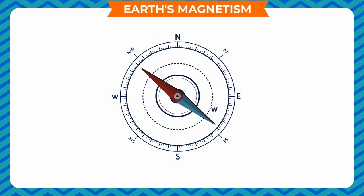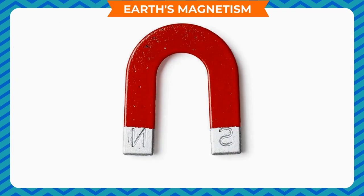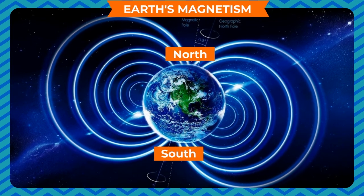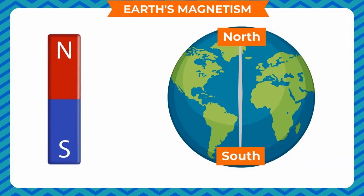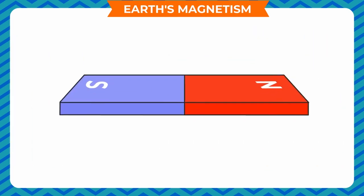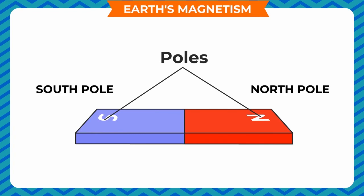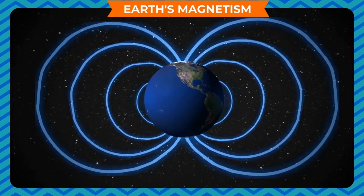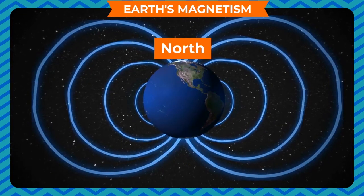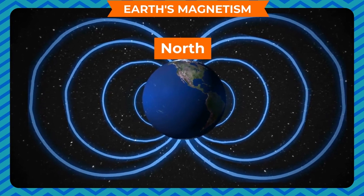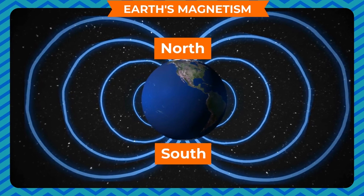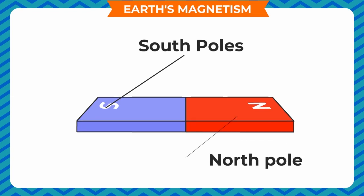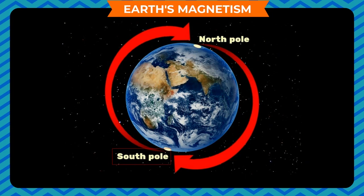Earth's Magnetism: A freely suspended magnet always comes to rest in the north-south direction. This is because the earth itself behaves like a huge bar magnet with its magnetic poles near the geographical north and south poles. The north pole of the earth's magnet is near the geographical south pole, whereas the south pole of the earth's magnet is near the geographical north pole. In a freely suspended magnet, the north pole points towards the geographical north pole since it is attracted by the earth's magnetic south pole. Similarly, the south pole of the suspended magnet points towards the geographical south pole of the earth.